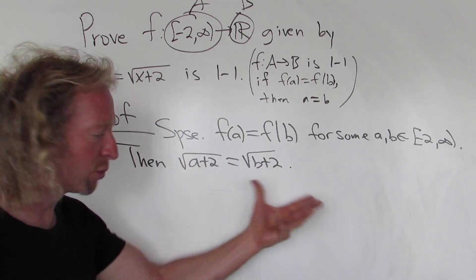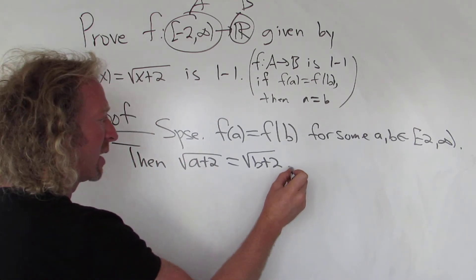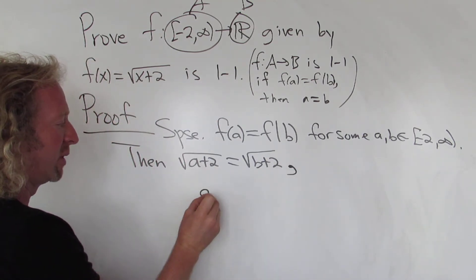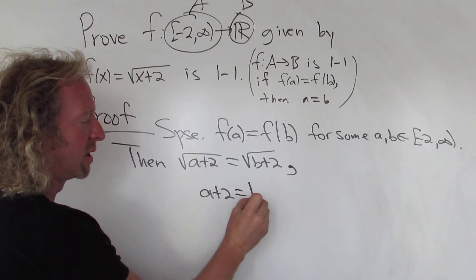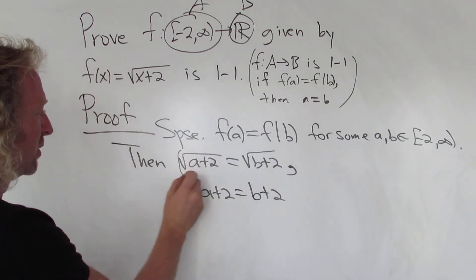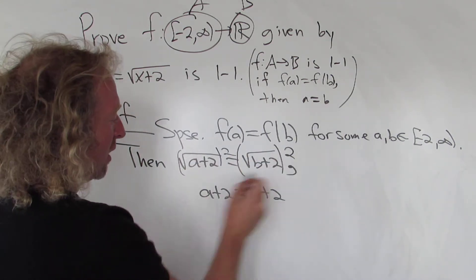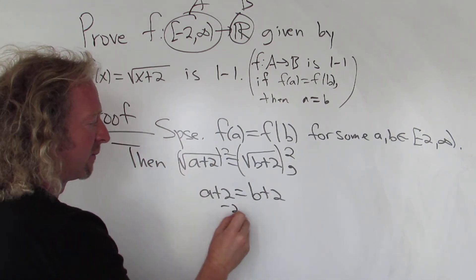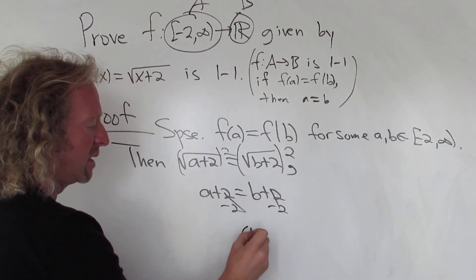So to get rid of the square roots we'll square both sides. When we do that we get a plus 2 equals b plus 2, because we can square both sides. Then you subtract 2 from both sides. So a is equal to b.